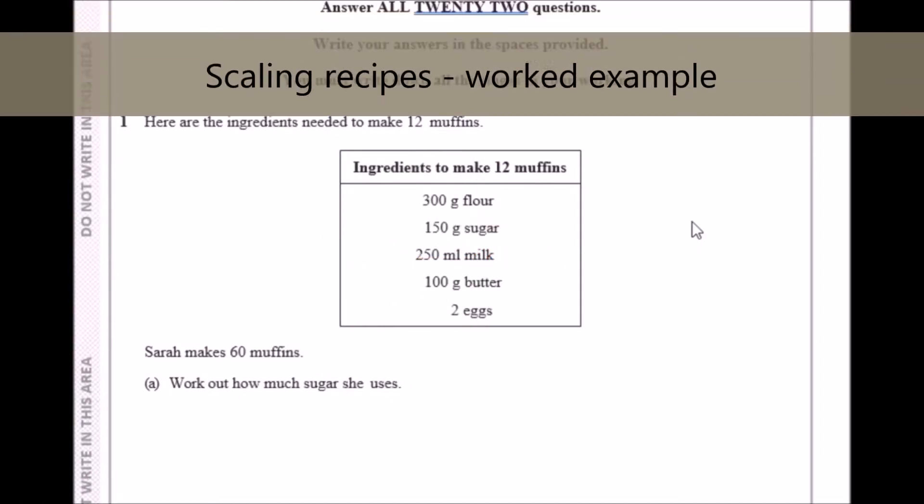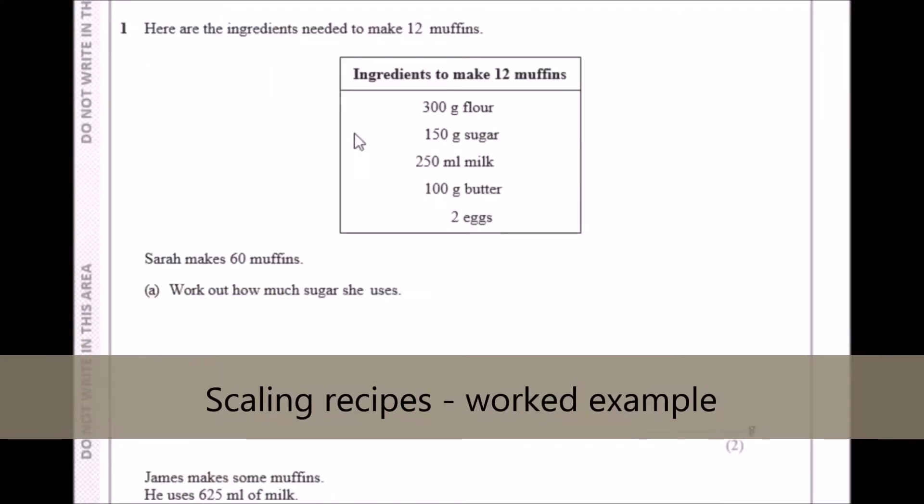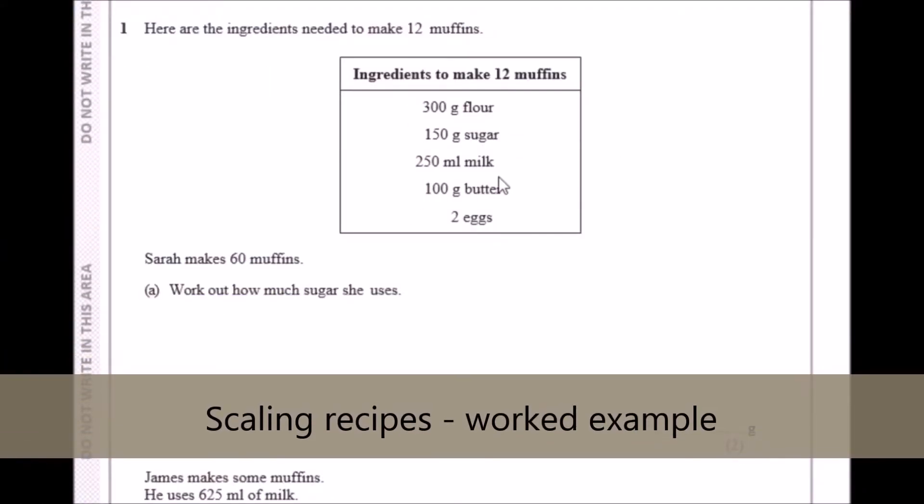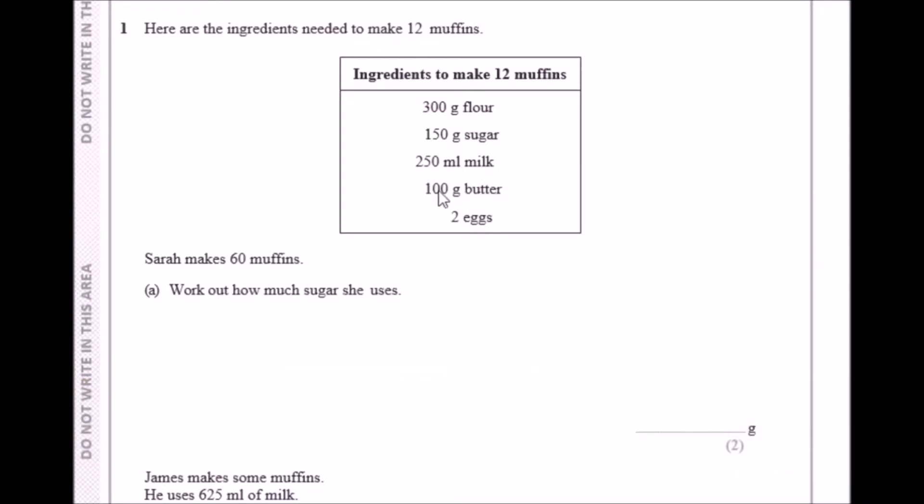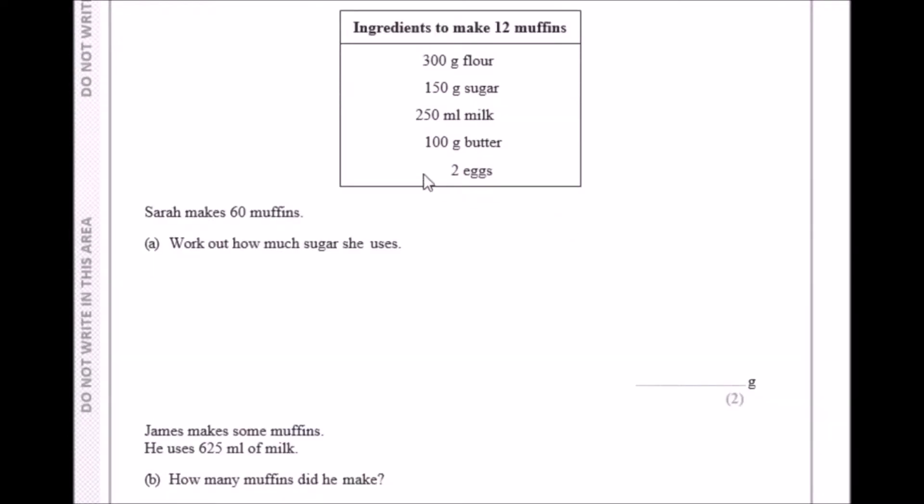Here are the ingredients needed to make 12 juicy muffins. This is what we're given for 12 muffins: flour and sugar in grams, the volume of milk, 100 grams of butter, and two lovely eggs.